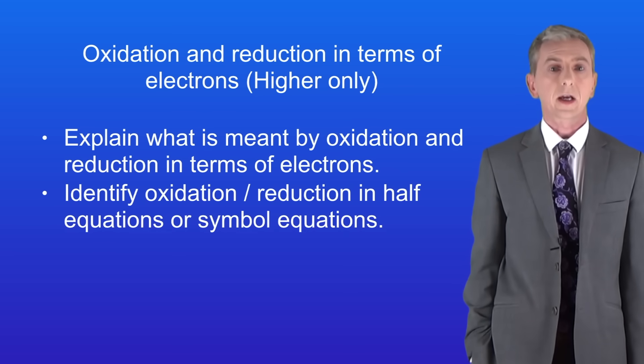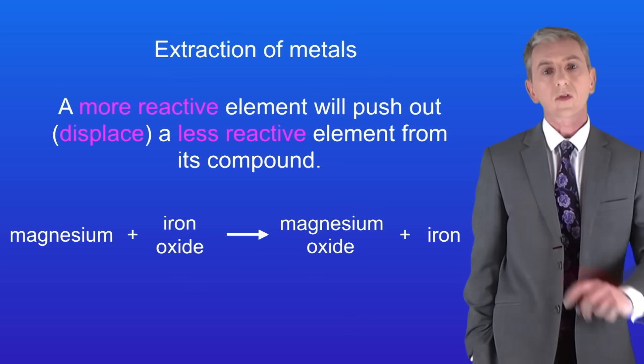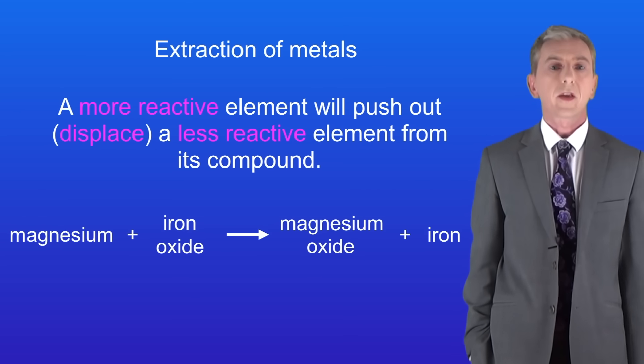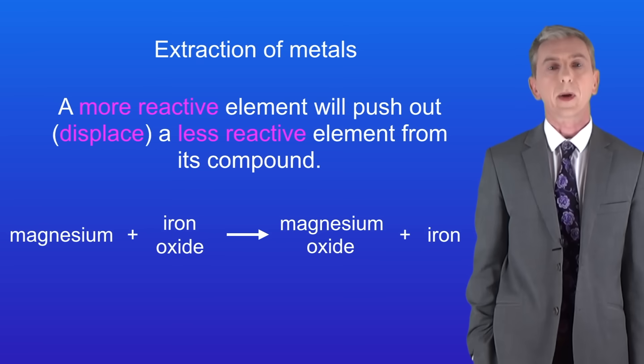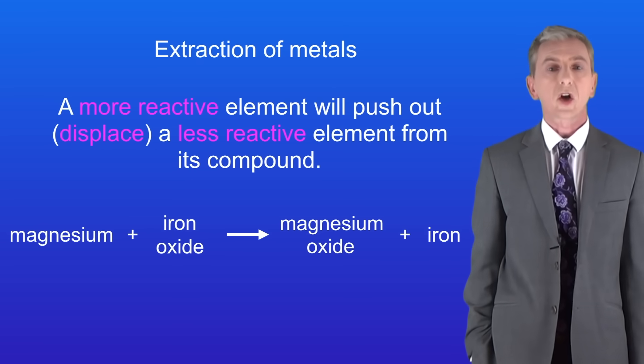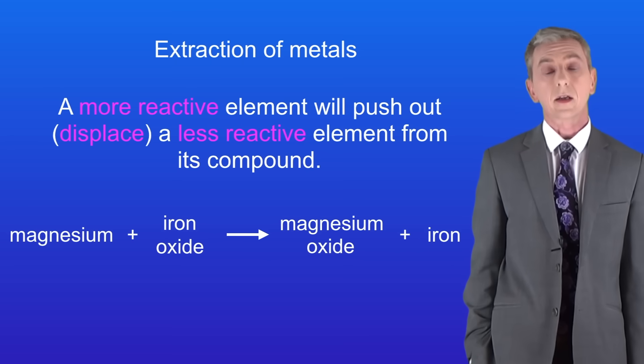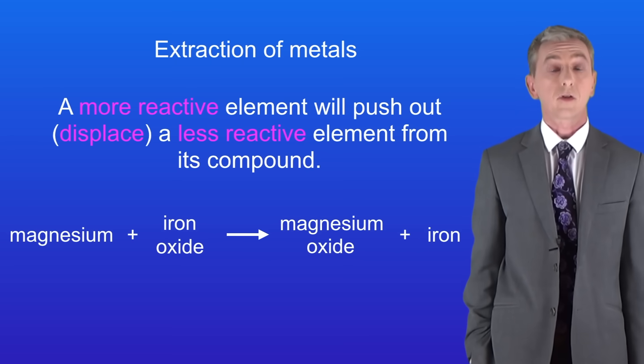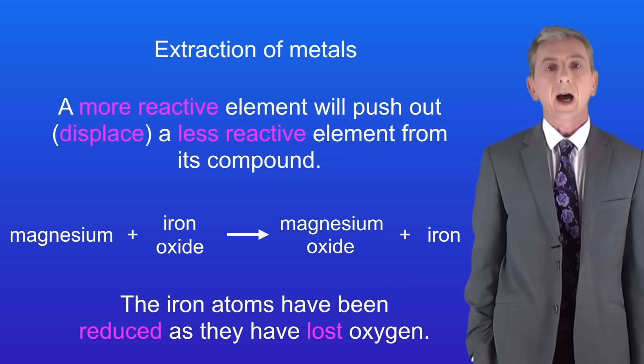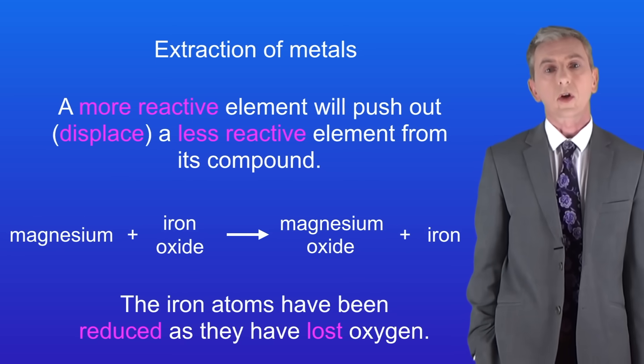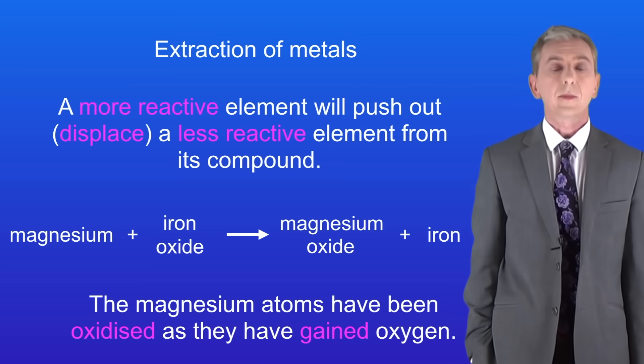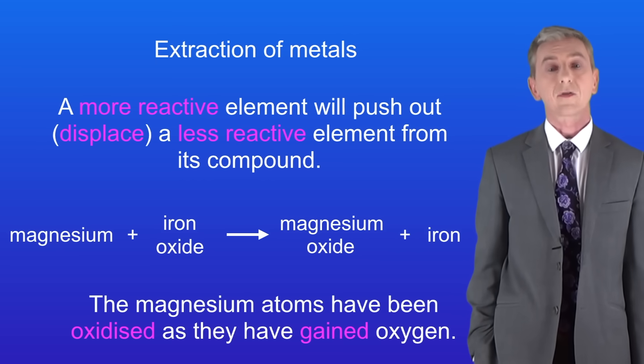In the last video, we started looking at displacement reactions such as this one. A more reactive element will displace a less reactive element from its compound. In this case, because magnesium is more reactive than iron, it displaces the iron from the iron oxide. The iron atoms have been reduced as they've lost oxygen. The magnesium atoms have been oxidized as they've gained oxygen.